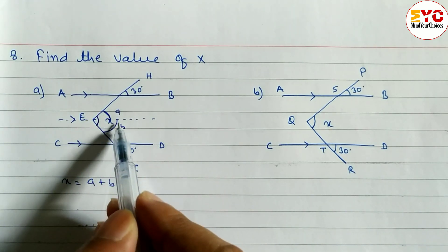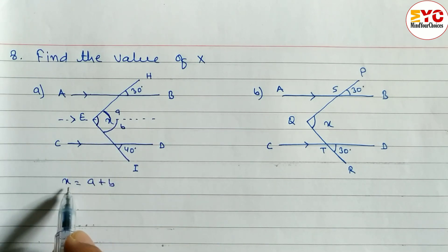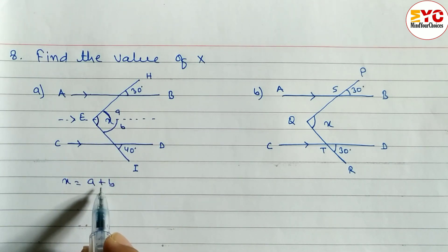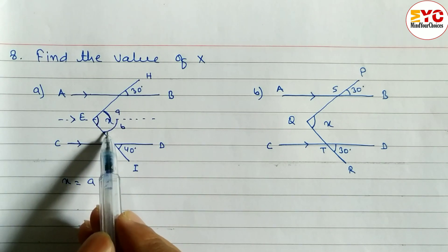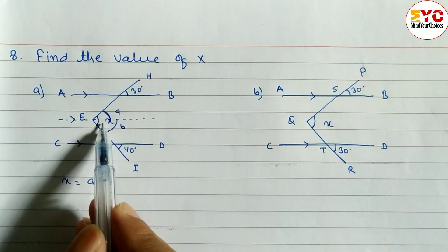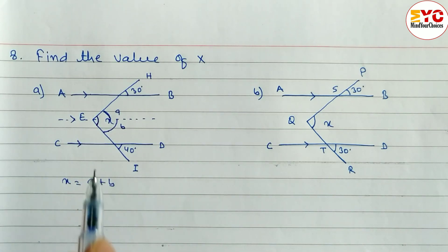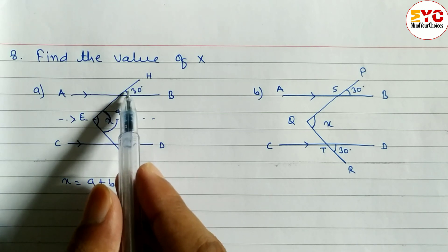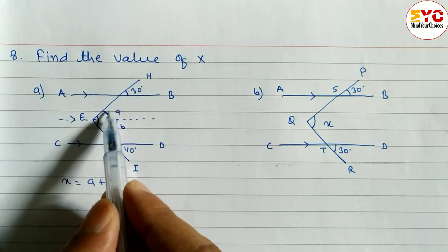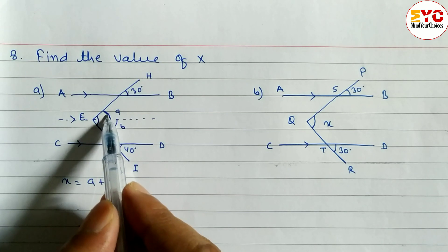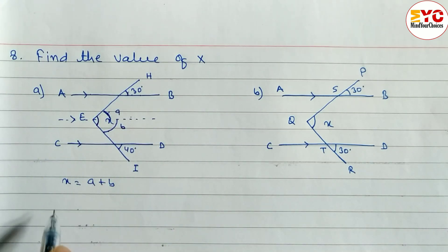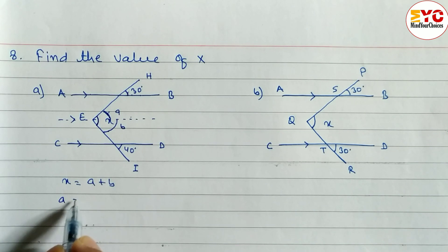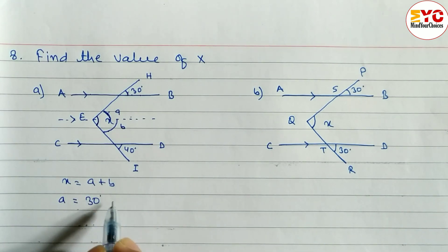Upper part is A and downside is B, so x is equal to A plus B. First of all we have to find out the value of A, then find out the value of B. You can see that the angle given is 30 degrees. These two angles — one is inside and one is outside of the parallel lines — so their relation is corresponding angles. So we can write A is equal to 30 degrees.